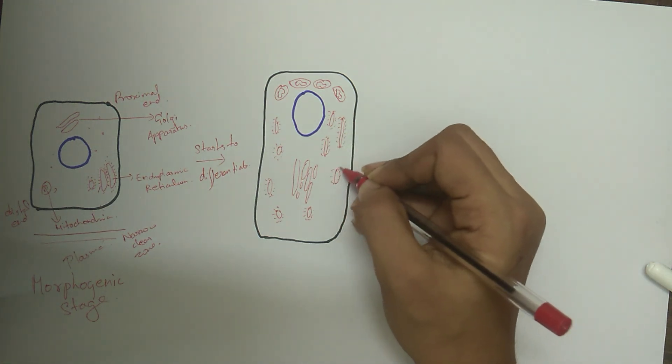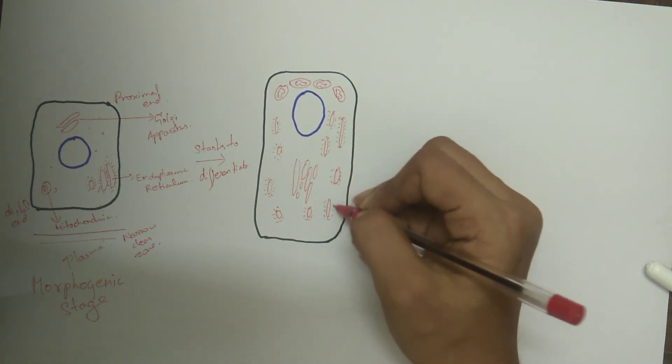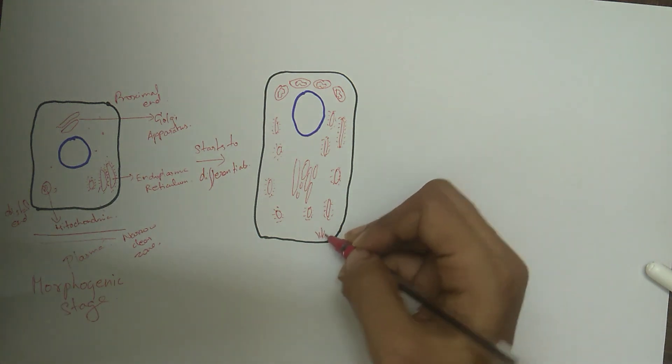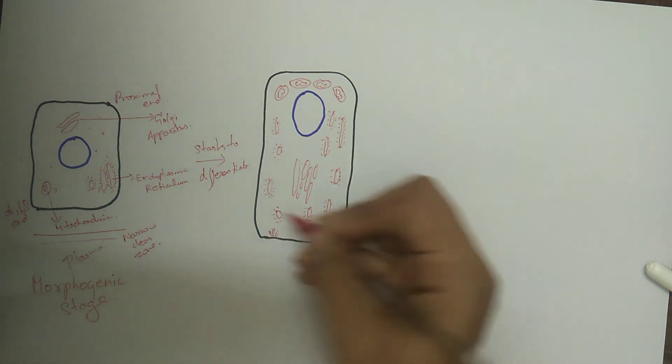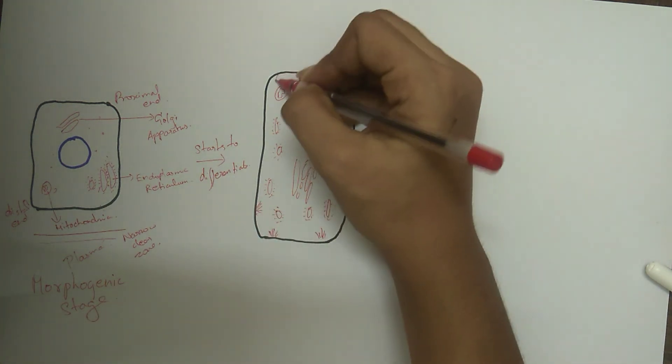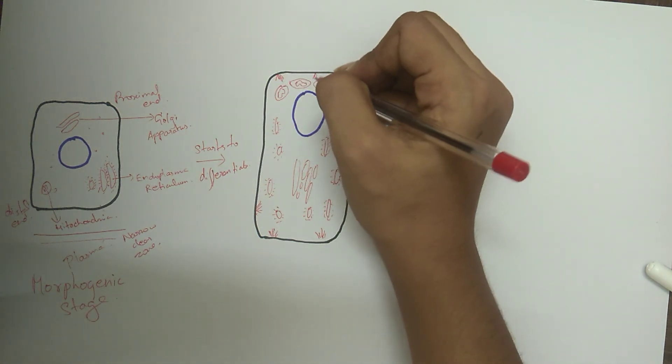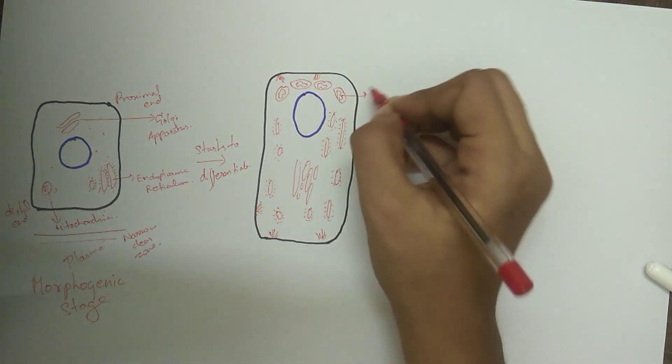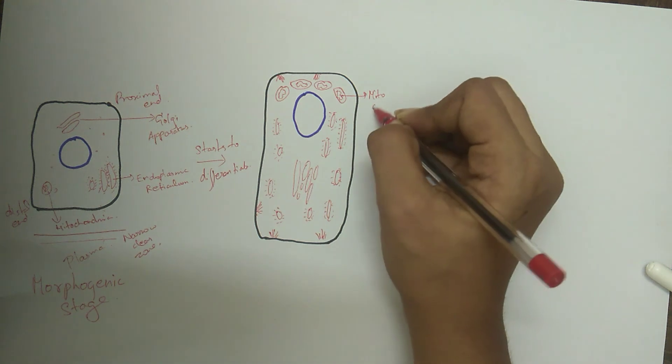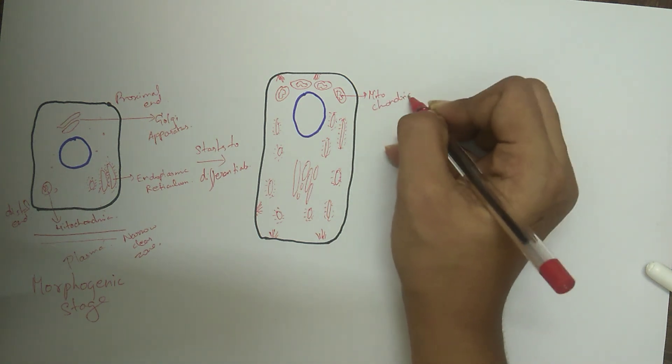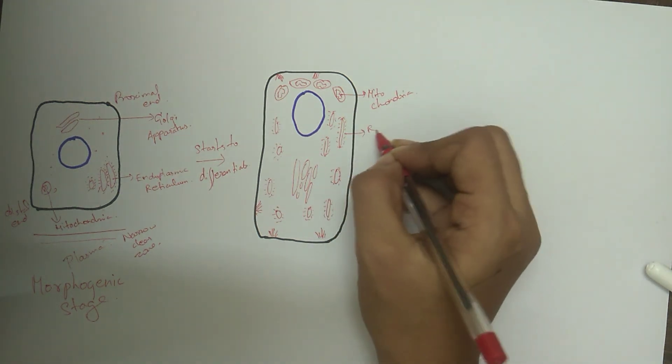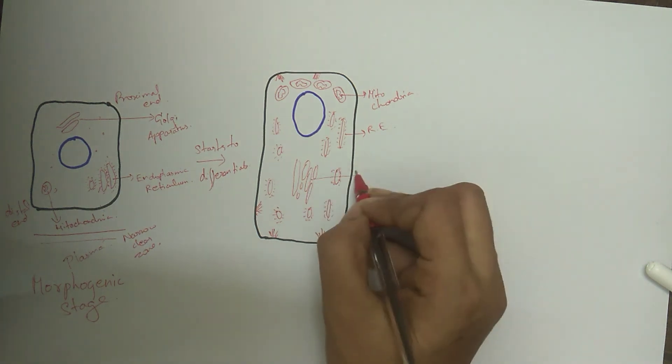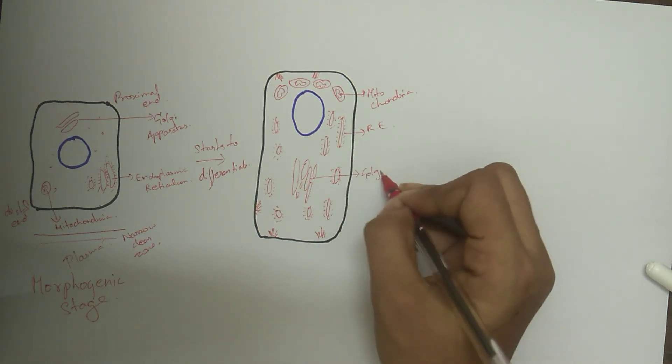Because of the elongation of the inner enamel epithelial cells on the distal side, the cell-free zone between the inner enamel epithelium and the dental papilla disappears, and the epithelial cells come in contact with the outermost connective tissue cells of dental papilla which differentiated into odontoblast.